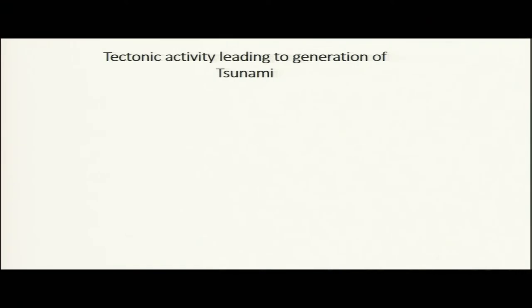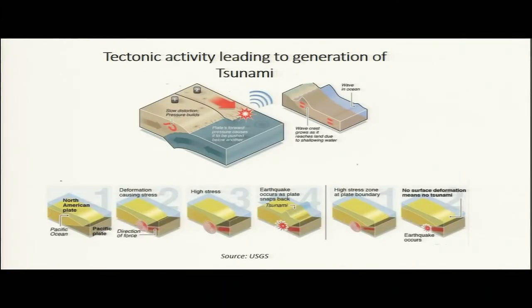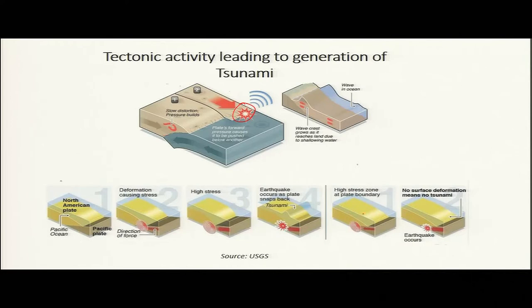Here we will talk about the tectonic activity leading to generation of tsunami. As seen in the previous slide, an earthquake creates a tsunami. One slab is subducting and another is overriding it. The North American plate overrides the Pacific plate; deformation between these two plates causes stress. High stress leading to a slip releases energy that creates the earthquake, which snaps back and generates waves — these are the highest stress zones at plate boundaries where earthquakes and tsunamis are generated.